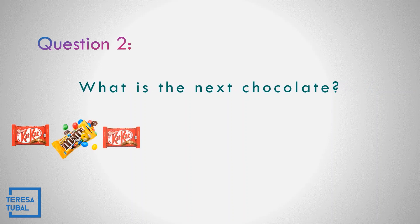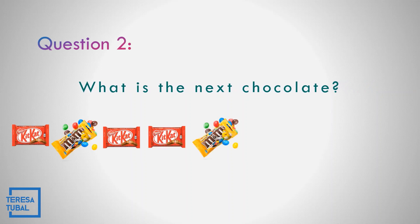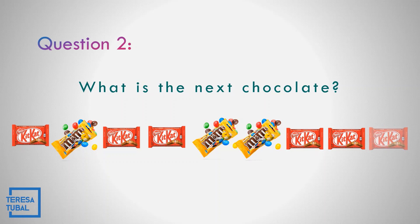What is the next chocolate after KitKat? The answer is KitKat. The pattern is one KitKat, one M&M, two KitKat, and then two M&Ms, and then after two M&Ms, that is three KitKat.